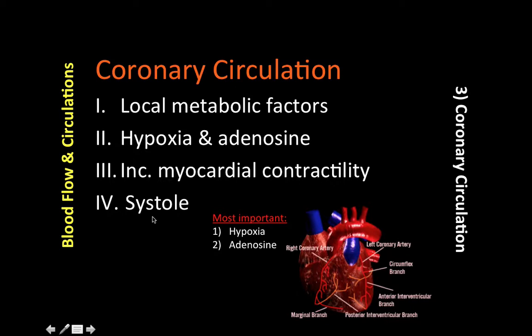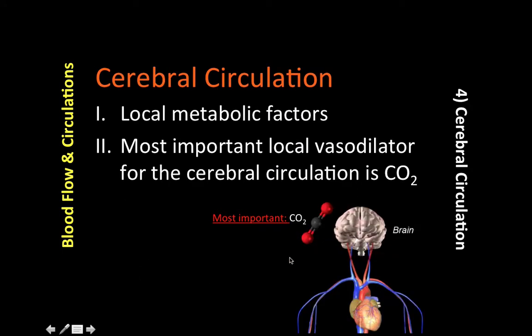During systole, which is the contraction phase, mechanical compression of the coronary vessels reduces blood flow. After that period of occlusion, blood flow increases in order to repay the O2 debt — that is reactive hyperemia. Finally, sympathetic nerves play only a minor role in coronary circulation.